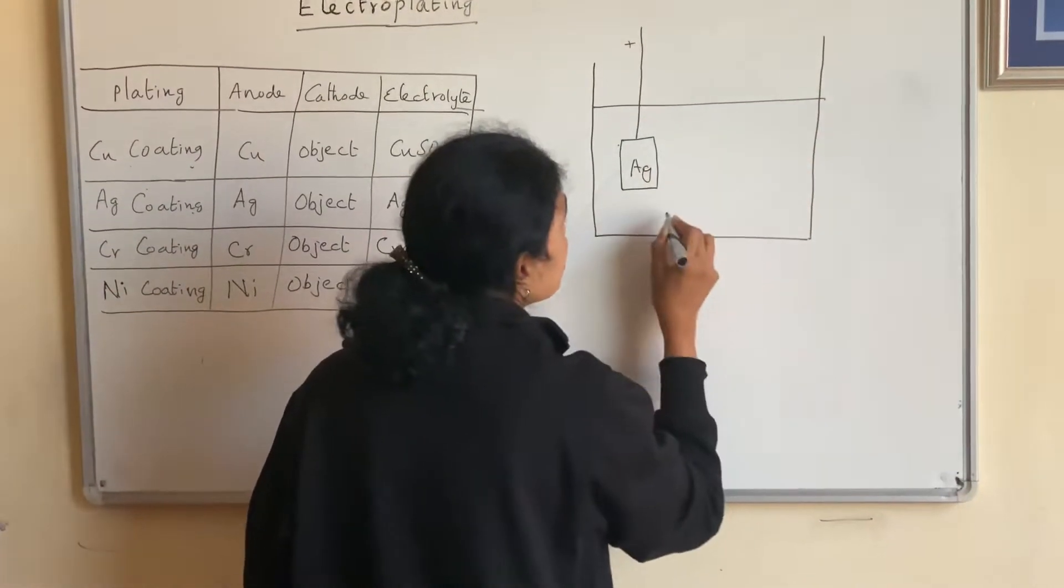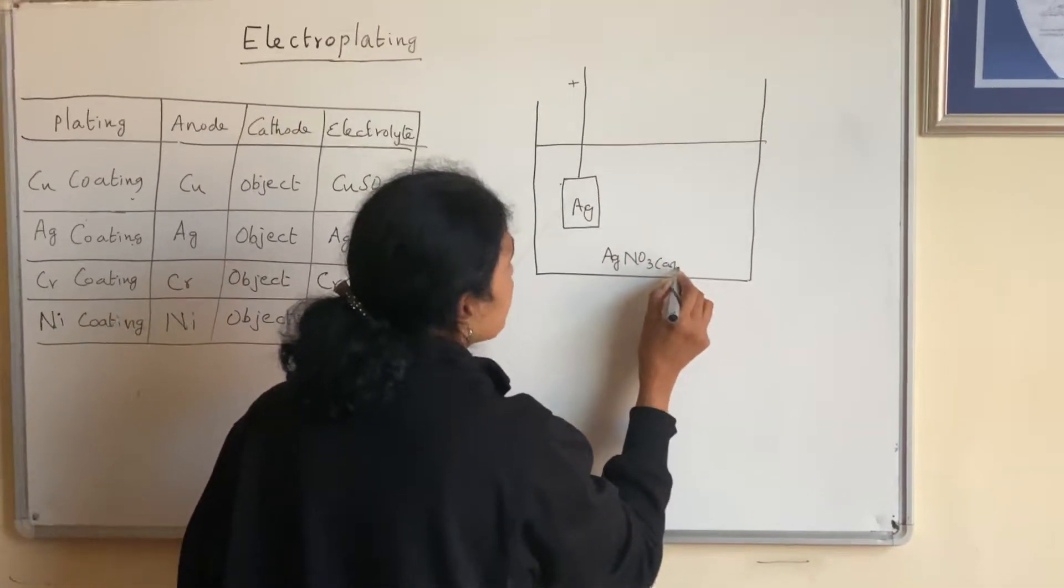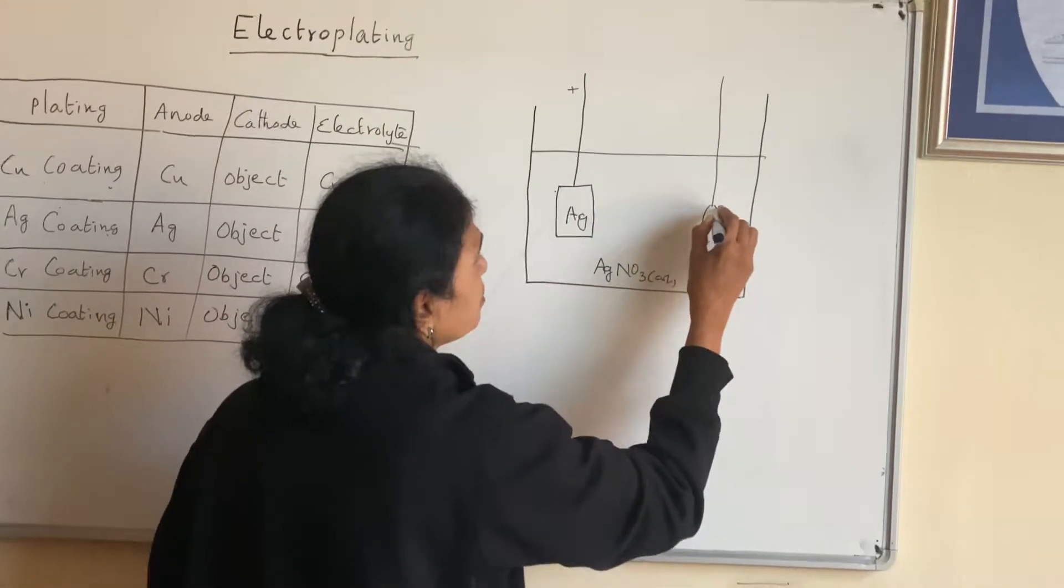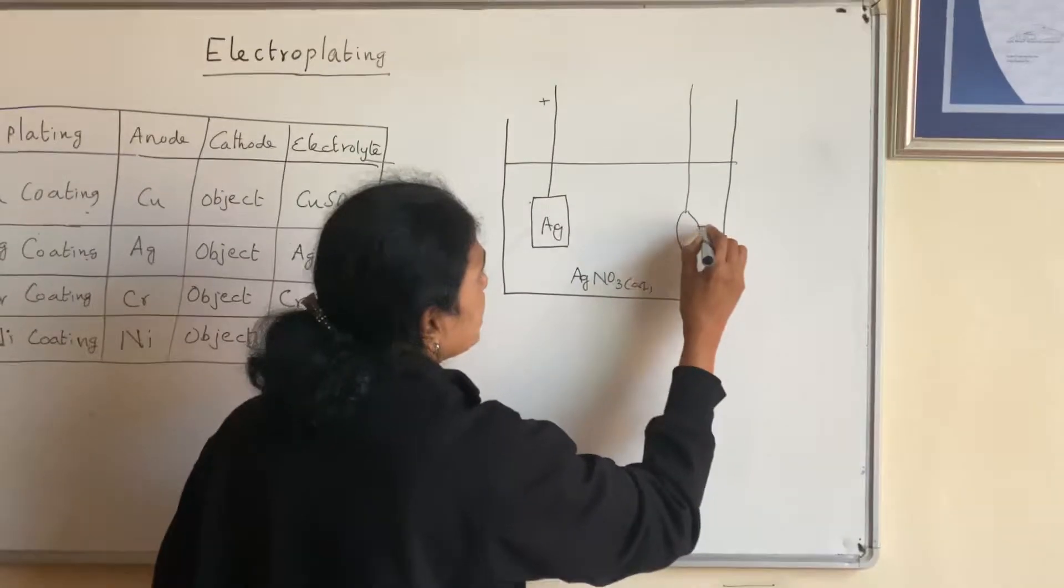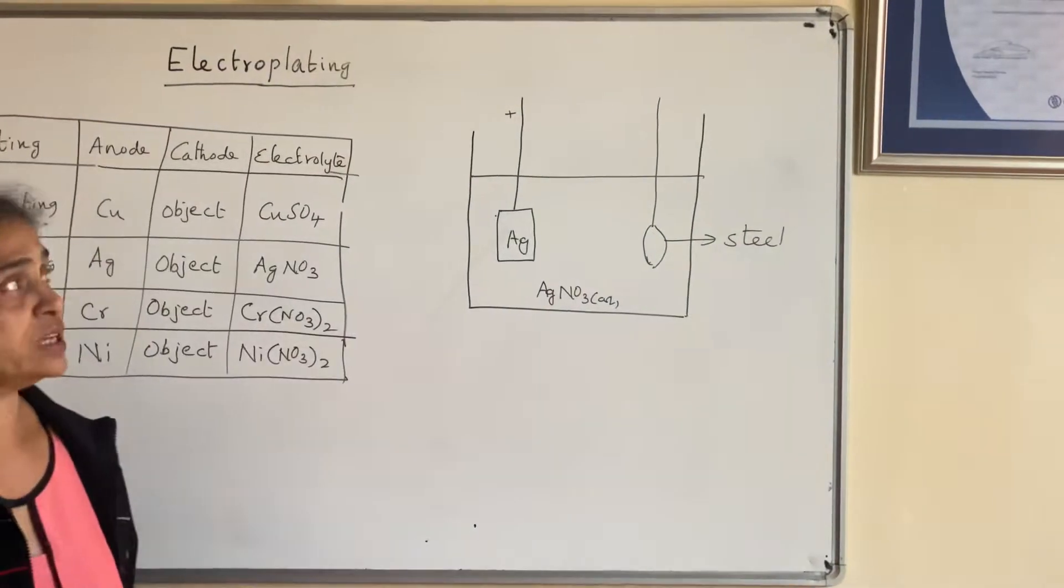And silver nitrate must be my electrolyte. Silver nitrate is an electrolyte. And I have a spoon which is made up of steel. Steel means it is iron. And you want to coat this with silver.